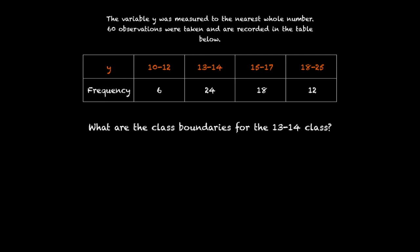At first this seems like a weird question. But notice how there are gaps between each group. There's a gap between 12 and 13, another gap between 14 and 15, and another one between 17 and 18. Therefore, because we're dealing with continuous data, we have to extend the class boundaries to the midpoint of each gap. And so the class boundaries for the 13 to 14 class are 12 and a half and 14 and a half.